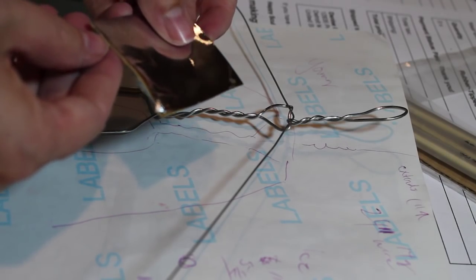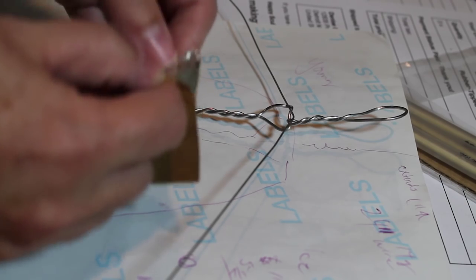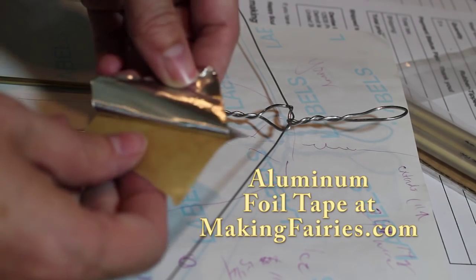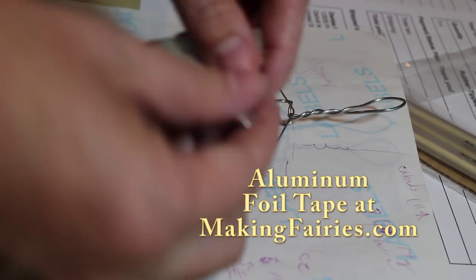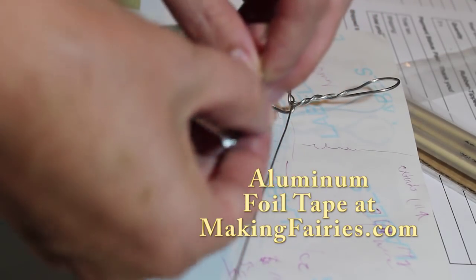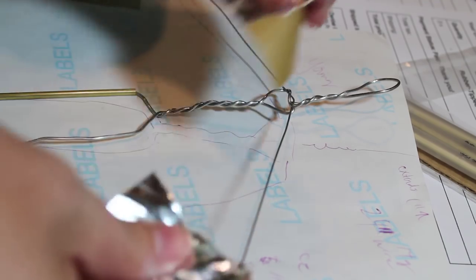And then I like to use this aluminum foil tape. Usually you can find a humongous roll of it in the vent and dryer and plumbing department, I guess, of your home store. But you can get it at makingfairies.com in smaller amounts.